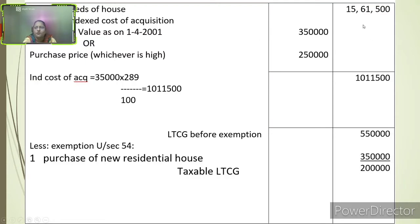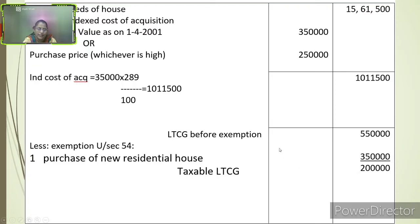Solution: Sale proceeds of the house = rupees 15,61,500. Indexed cost of acquisition: Fair market value as on 1-4-2001 is rupees 3,50,000 and purchase price is rupees 2,50,000 — we take the higher, i.e., rupees 3,50,000. Indexed cost of acquisition = 3,50,000 × 289 ÷ 100 = rupees 10,11,500. Deducting from sale proceeds: 15,61,500 − 10,11,500 = rupees 5,50,000 as LTCG before exemption. Less exemption under Section 54 = rupees 3,50,000 (cost of new residential house). Taxable LTCG = rupees 2,00,000.